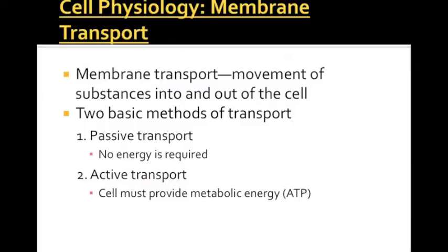There are two types of membrane transport: passive and active. The only difference is that active transport must use ATP. Passive transport does not require any energy, whereas active transport does require ATP. The goal of both is to move substances in and out of the cell as necessary, and the regulation of this is part of what keeps us at homeostatic balance.